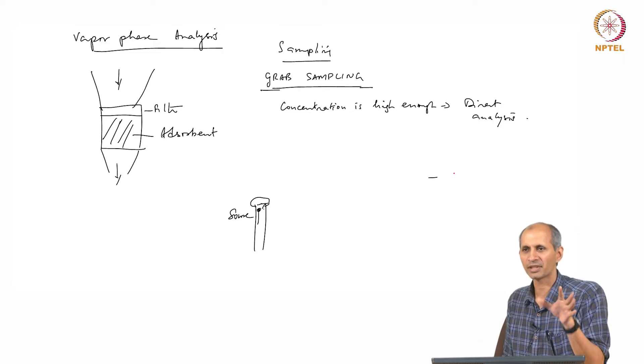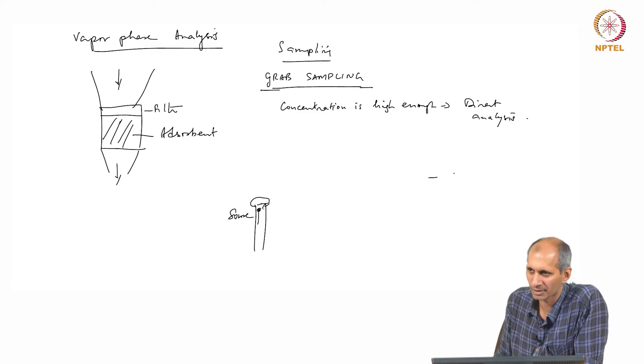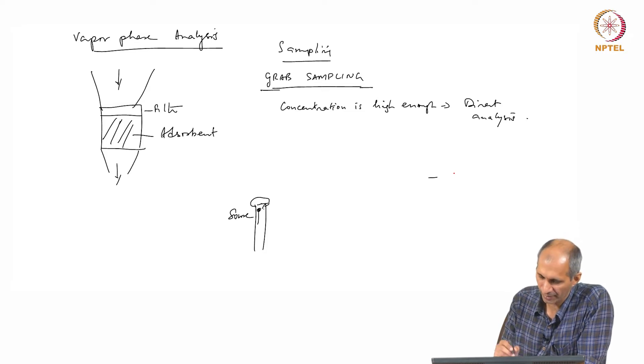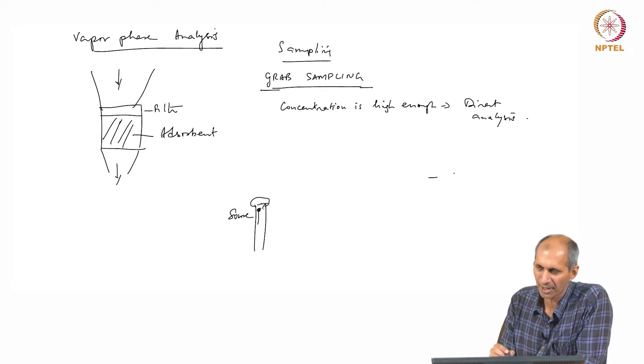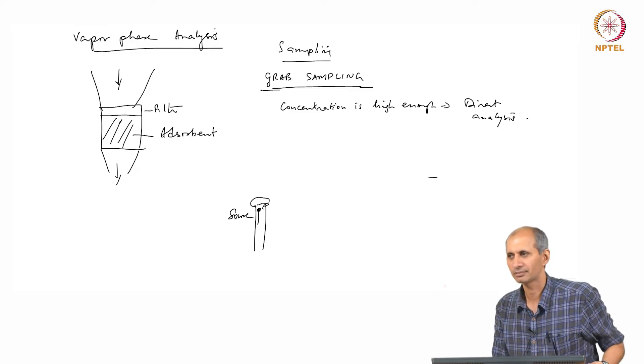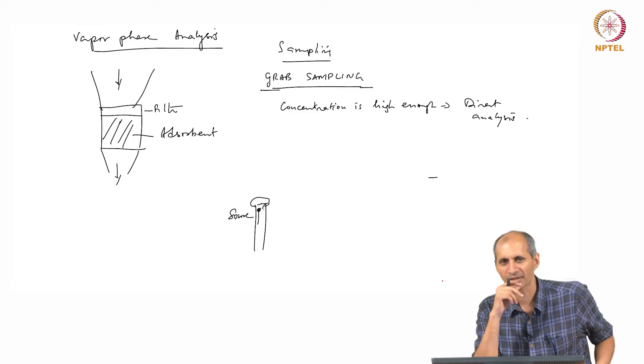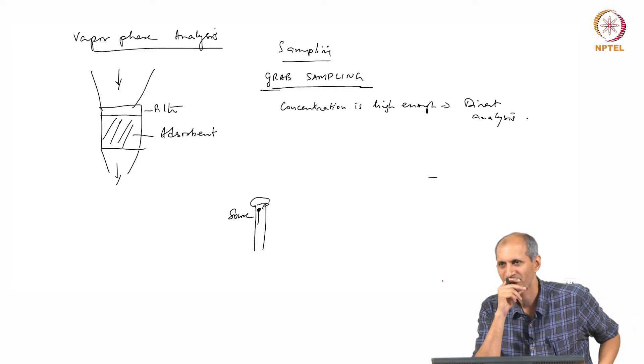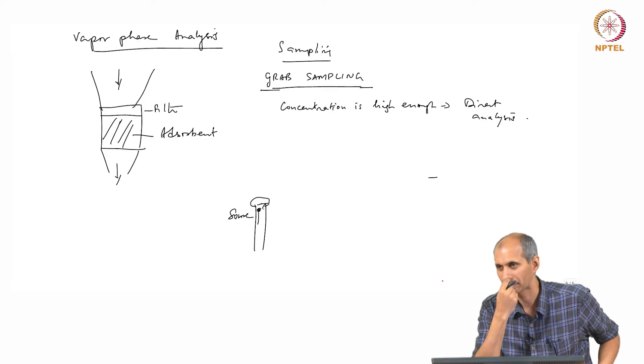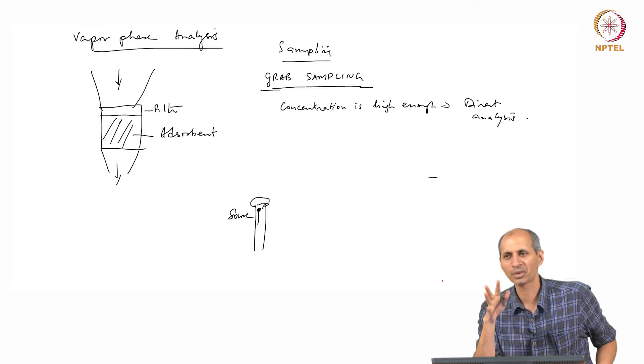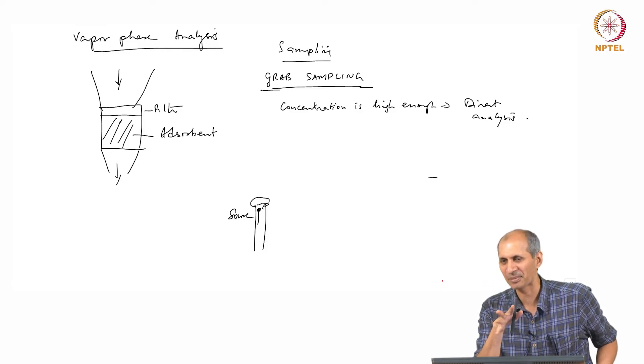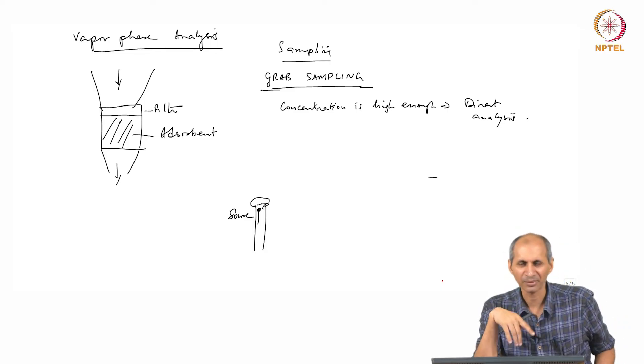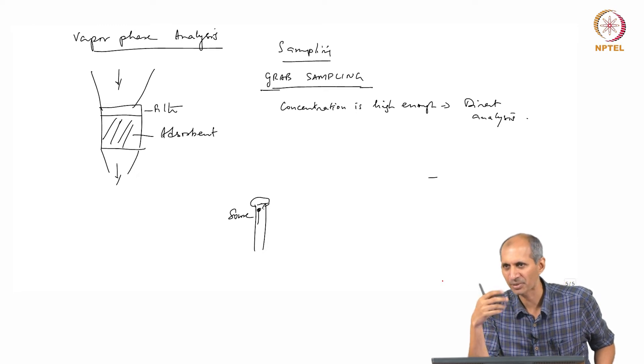If I do grab sampling, I may get nothing. People can make the wrong inference that there is nothing there. That's the biggest danger that we have. When you can do grab sampling, we will do grab sampling. How do you grab sample an air volume? Water you can open a container, it will go nicely. How will you do that with air?